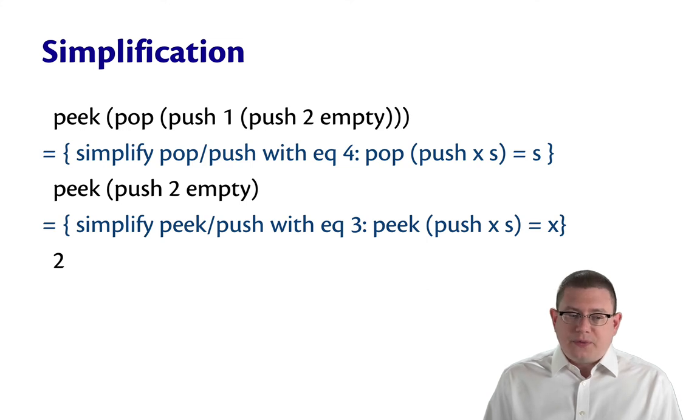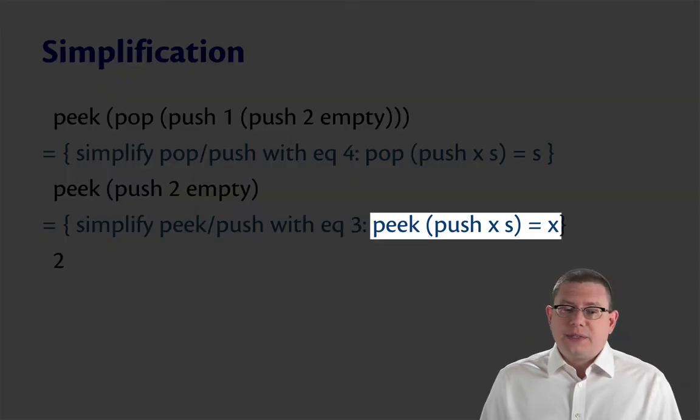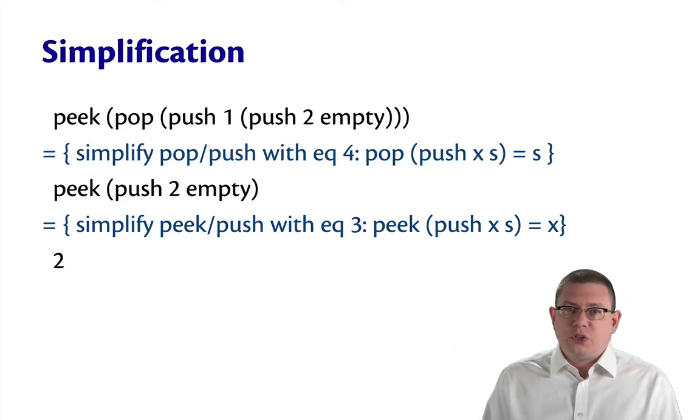So that simplifies and leaves us with a peek applied to a push. Well, equation three tells us how to simplify that because it tells us how a peek kind of cancels out a push. And that leaves us with just the element two.